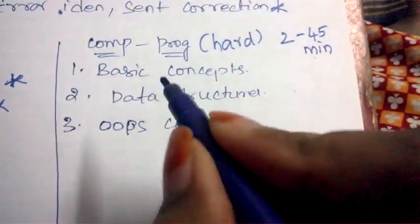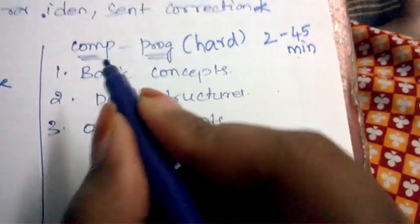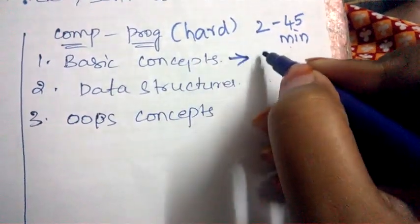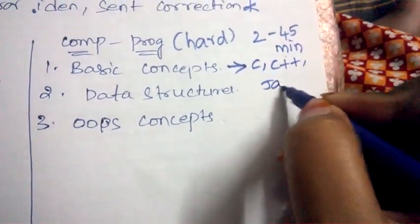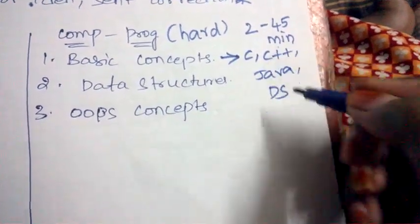Let's see what concepts will be covered under computer programming. The first topic is you need to concentrate on the basic concepts of C, C++, Java and data structures. Cover all the basic concepts of these four languages.